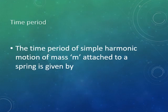The time required to complete one vibration of a body is called the time period. The time period of simple harmonic motion of mass attached to a spring is given by T = 2π√(m/k), where m is the mass, k is the spring constant, and T is the time period.